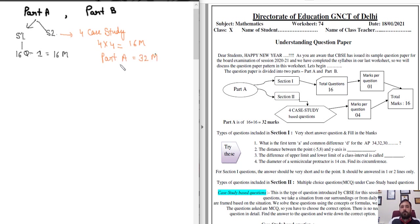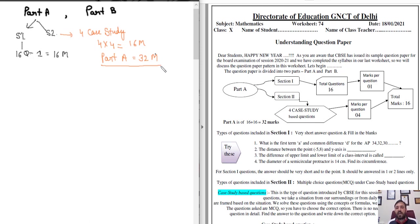The total marks reserved for Part A is 32 marks. Now we will discuss the types of questions included in Section 1.